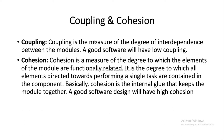The dependence of modular software systems can be measured using two criteria which are known as coupling and cohesion. Coupling is a measure of the degree of dependence between the modules, and cohesion is a measure of the degree to which elements of the modules are functionally related. A good software design requires high cohesion and low coupling.